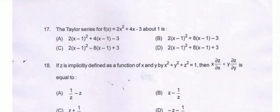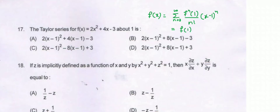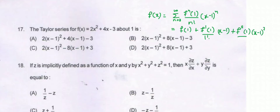Question number 17. The Taylor series for f(x) = 2x²+4x-3 about x=1. Using the Taylor series formula, f(x) equals the summation from n=0 to infinity of the nth derivative of f at 1, divided by n factorial, times (x-1)ⁿ. So this expands as f(1) + f'(1)/1! · (x-1) + f''(1)/2! · (x-1)² and so on.